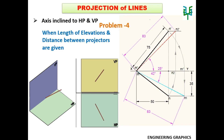This video explains the topic projection of lines with the condition axis inclined to both HP and VP. We are going to discuss a problem when the length of elevation and distance between projectors are given, and the true length and inclination with HP and VP are to be found out.